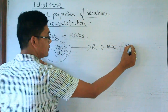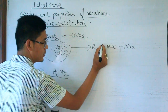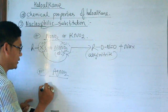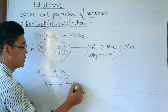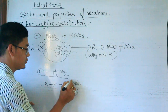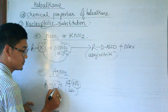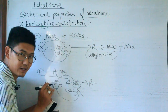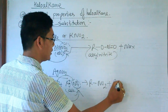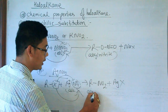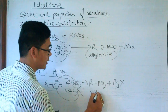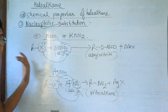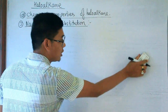When nitrogen of NO₂⁻ attacks the haloalkane carbon, the product is a nitroalkane (R–NO₂). When oxygen attacks, the product is an alkyl nitrite (R–ONO). This is another example of nucleophilic substitution. NaNO₂ acts as the nucleophile and X⁻ is the leaving group.